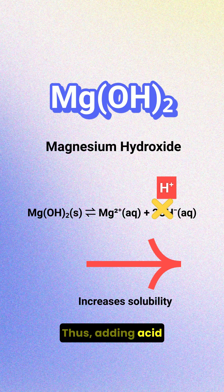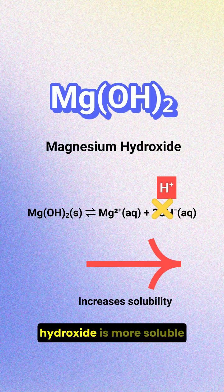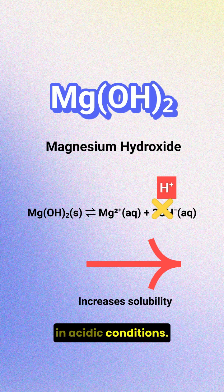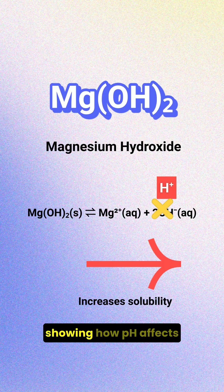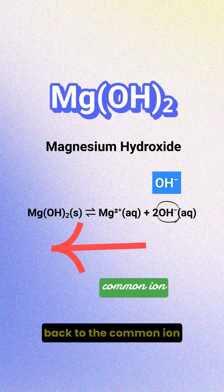Thus, adding acid increases the solubility of magnesium hydroxide. So overall, magnesium hydroxide is more soluble in acidic conditions. This is a great example showing how pH affects solubility and ties right back to the common ion effect you learned before.